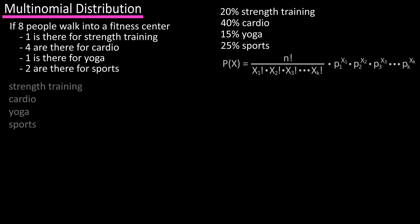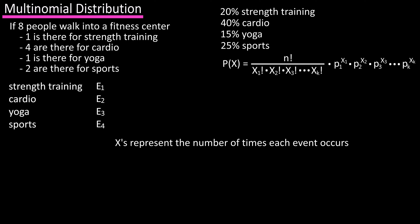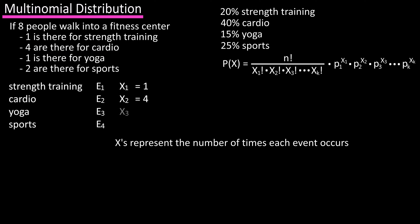First let's unpack the question. We have four different activities — strength training, cardio, yoga, and sports — so these activities are the different events, e1 through e4. The x's represent the number of times each of the different events occur. x1 (strength training) = 1, x2 (cardio) = 4, x3 (yoga) = 1, and x4 (sports) = 2. Summing these gives n = 8, which is the total number of trials.